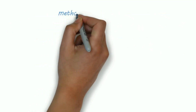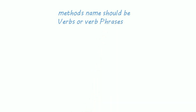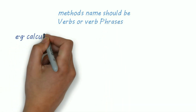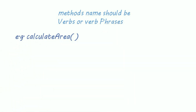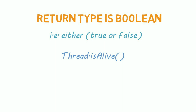A method should be a verb or verb phrase — for example, calculateArea. The method should tell its purpose by its name.